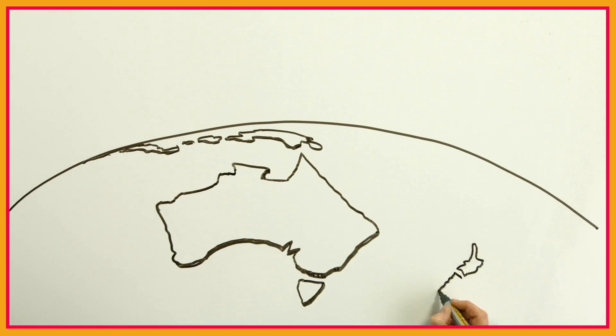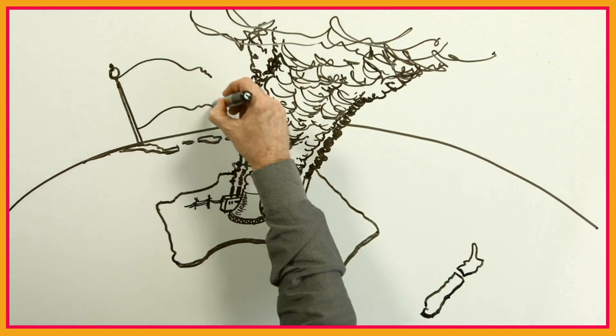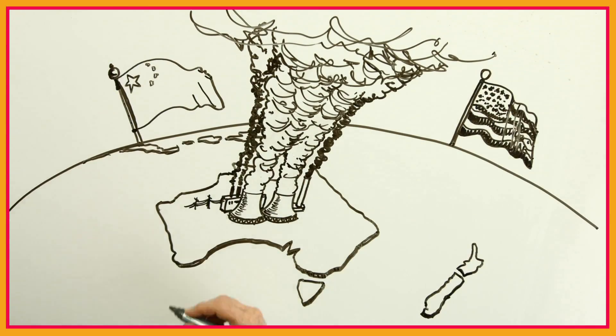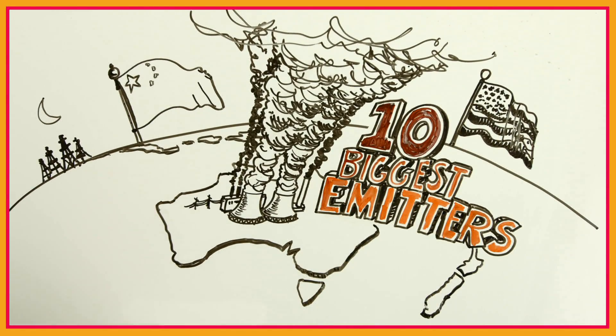Not only are these stations old, they're inefficient, which means Australia produces more pollution per unit of electricity than China, the US and other oil-rich Middle Eastern nations. In fact, Australia is one of the world's ten biggest emitters of greenhouse gases from electricity and heat production.